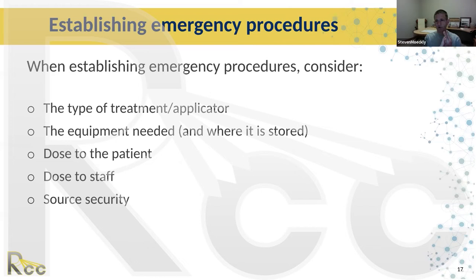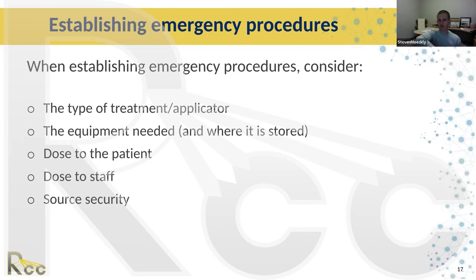The easiest applicator to remove would be a vaginal cylinder; an endometrial applicator might be more difficult. You need to think about your response in different situations. Consider the equipment needed, where it's stored, and where you'll place it in the room. The pig should generally be on wheels and positioned so that when the doctor removes the applicator from the patient in an emergency, they can put it directly into the pig without having to reposition it — every second counts.